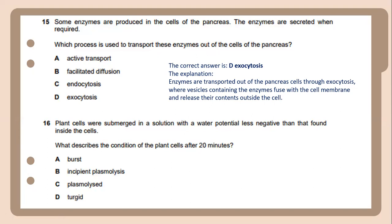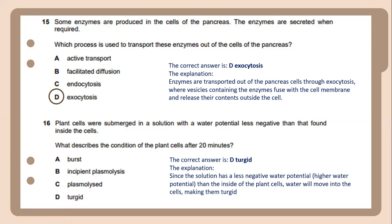The plant cell was submerged in a solution with a water potential less negative than that found inside the cells. Which describes the condition of the plant cell after 20 minutes? Since the solution has less negative water potential, higher water potential than the inside of the plant cell, water will move into the cell, making them turgid.